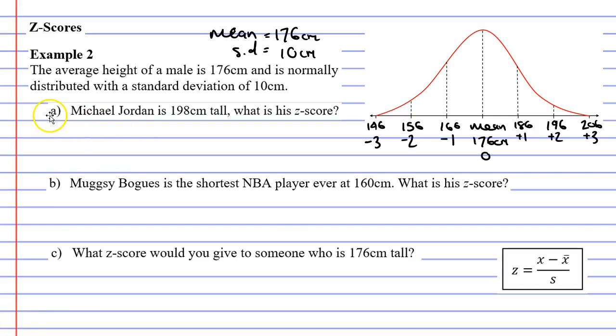Looking at question A, Michael Jordan is 198 centimeters tall. What is his Z score? 198 centimeters is about here on the bell curve, and you can see that it's slightly above positive 2. So it's going to be a Z score of 2 point something. Because of that we really need to use the formula here.